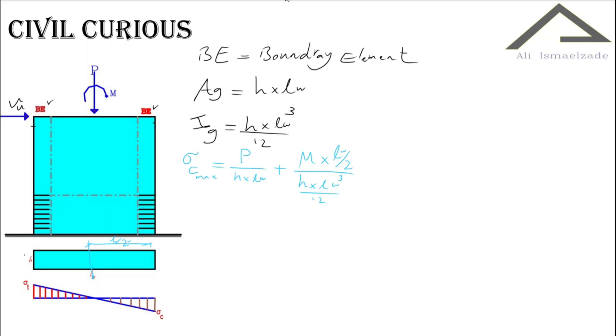And plus the moment due to shear wall. VU times the height of the shear wall that I'm gonna call it H, from here to here, VU times H as a moment times LW divided by two divided by moment of inertia H times LW to the power of three divided by two. This is the maximum of compressive tension.